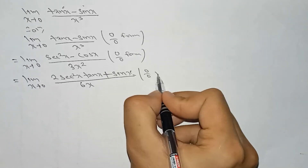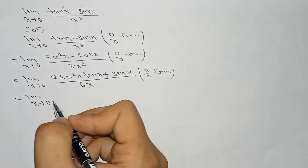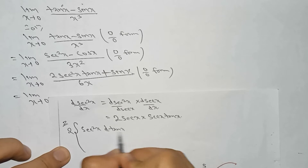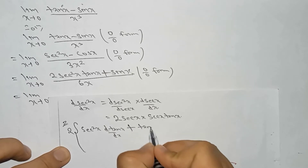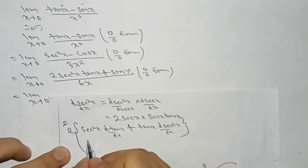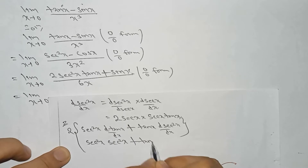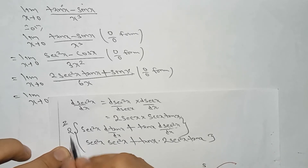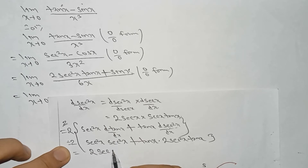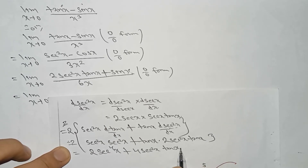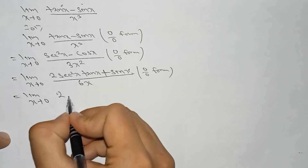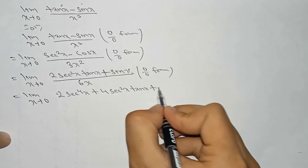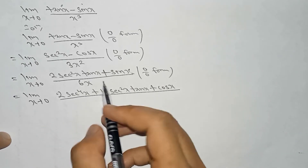Again it is in the form of 0 by 0, so again limit x tends to 0 and we differentiate once more. Using the product rule: 2 times [sec square x times d(tan x)/dx plus tan x times d(sec square x)/dx]. This gives 2 sec power 4 x plus 4 sec square x tan x. The differentiation of sin x is cos x, and the differentiation of 6x is 6. Now it is no longer in the 0 by 0 form.